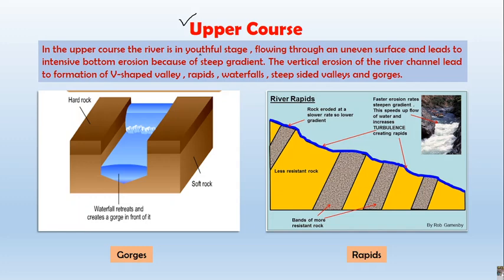In the upper course the river is in a youthful stage, flowing through an uneven surface — a mountain or highland — which leads to intensive vertical erosion because of the steep gradient. The river flows with great velocity as it makes its way down the steep slope, engaging in intensive bottom or vertical erosion. This leads to the formation of a V-shaped valley, rapids, waterfalls, deep-sided valleys, and gorges.